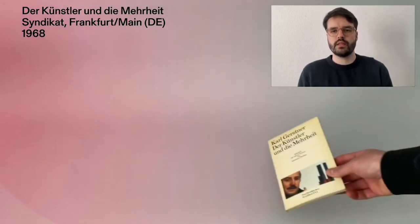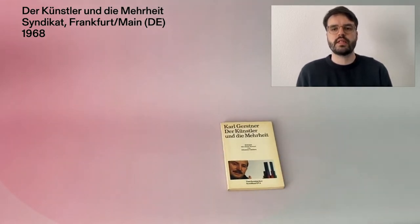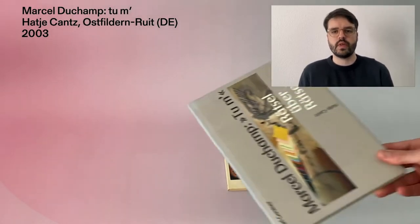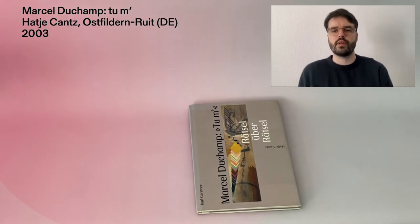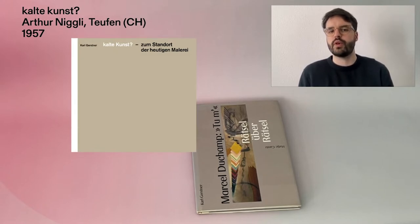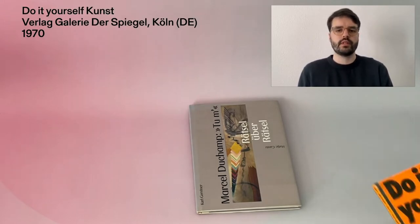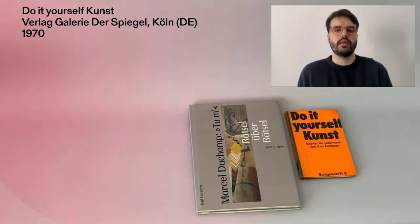Der Künstler und die Mehrheit (The Artist and the Majority), for example, is a collection of his essays on art theory. In Thiem, he analyzes Marcel Duchamp's last painting. Both works pursue a scientific or theoretical approach. The best-known example is probably Kaltekunst (Cold Art), but unfortunately it's a very expensive rarity. The theoretical work Do-It-Yourself Kunst (Do-It-Yourself Art) is also of interest, but I will discuss it later.